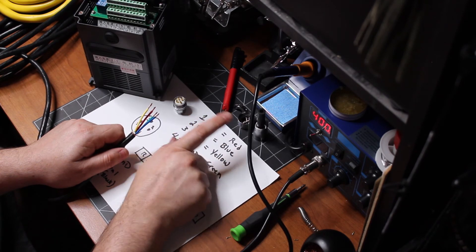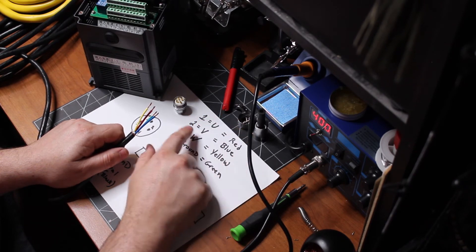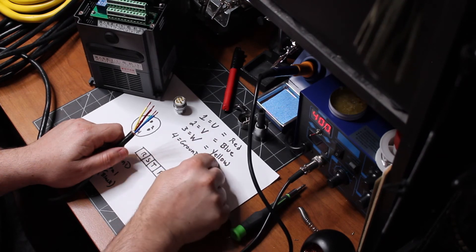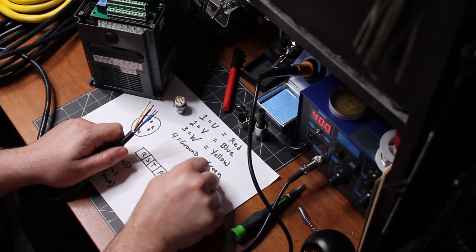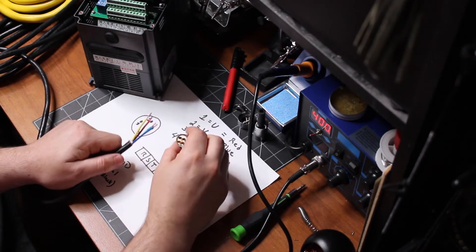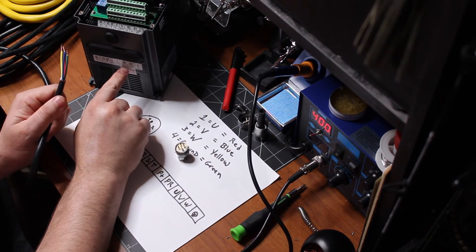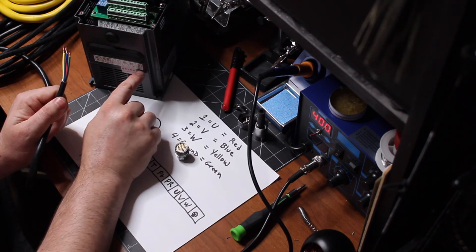And this is what I've chosen to be the colors for these corresponding numbers and letters. So one is going to be red. Two is going to be blue. Three is going to be yellow. And four is going to be green. That's how we're going to wire it here to the plug. And that's how we're going to wire it here to the inverter.